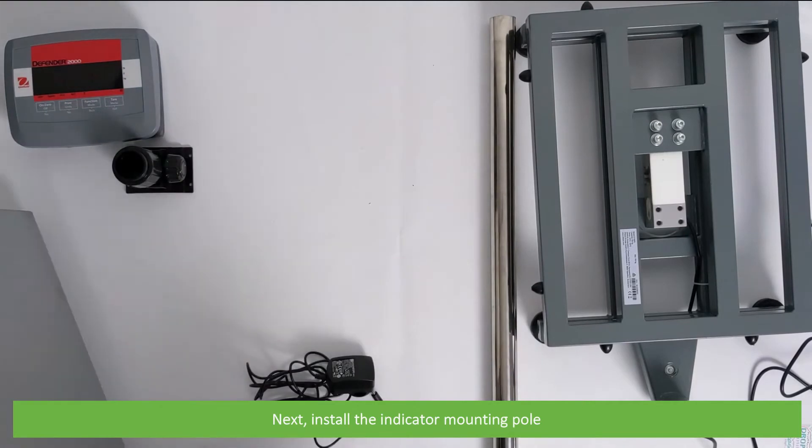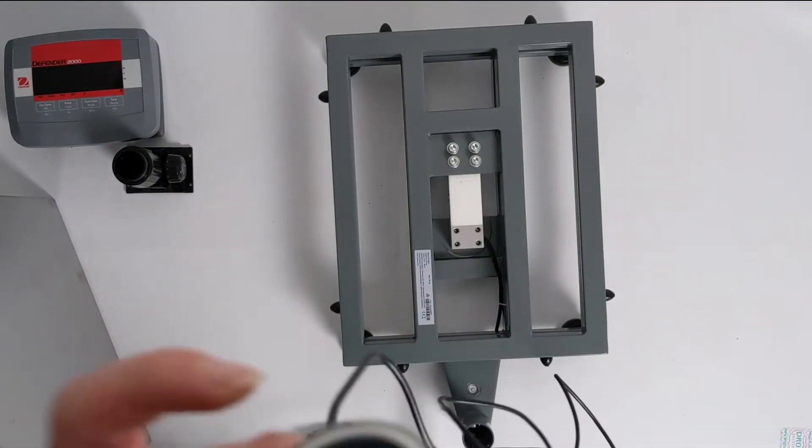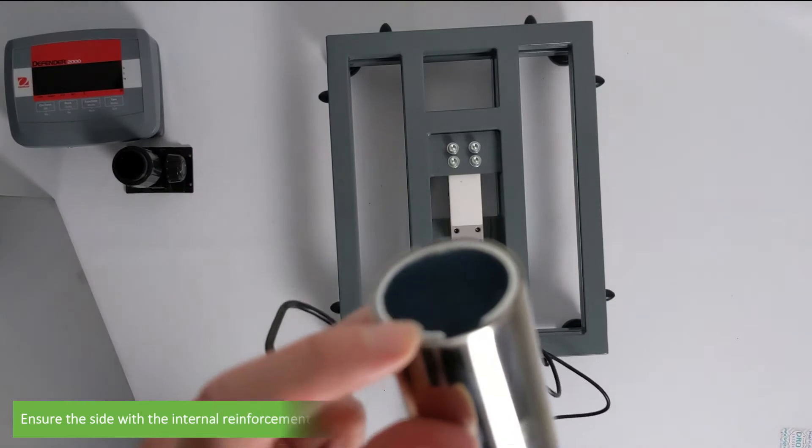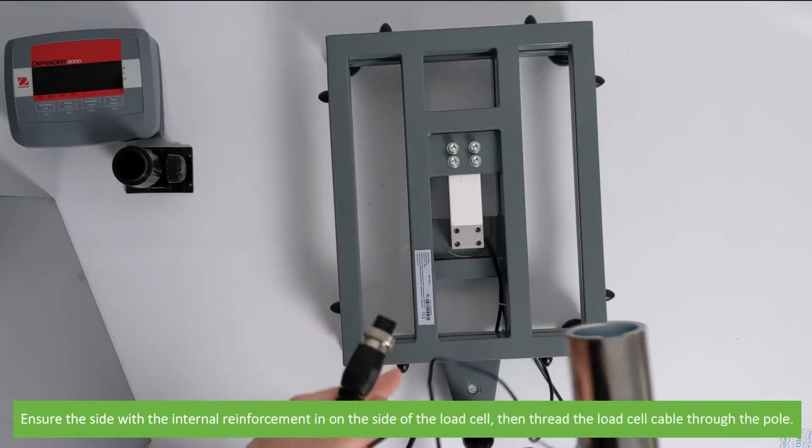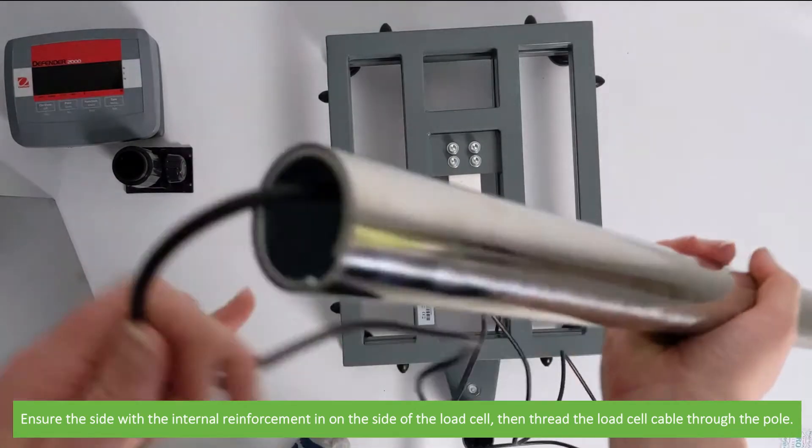Next, install the indicator mounting pole. Ensure the side with internal reinforcement is on the side of the load cell. Then, thread the load cell cable through the pole.